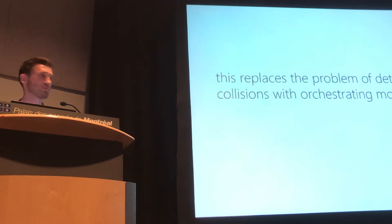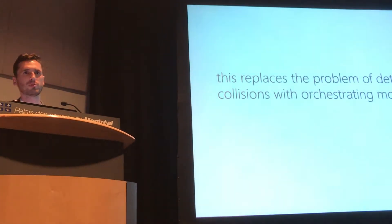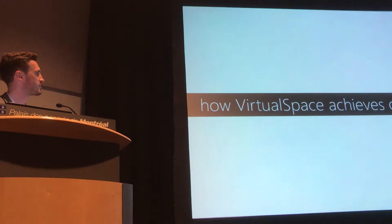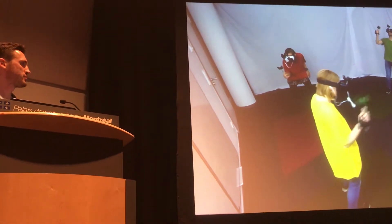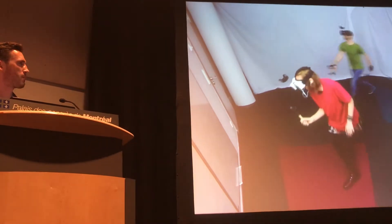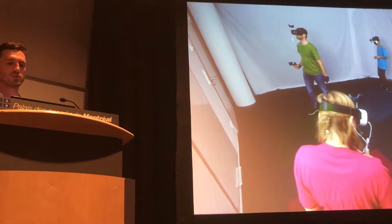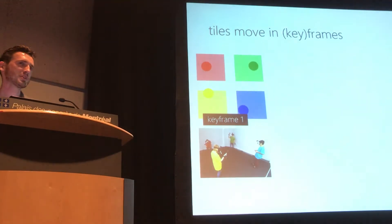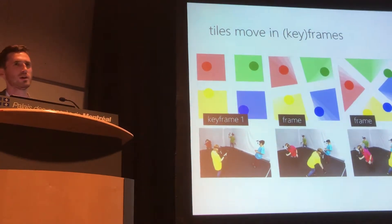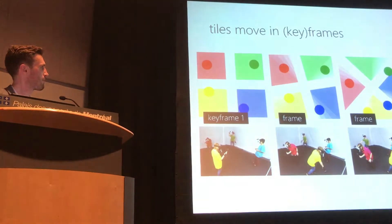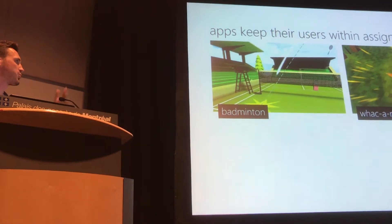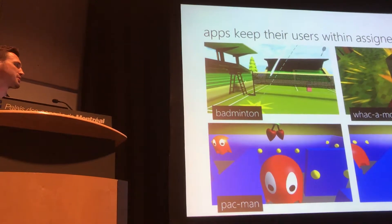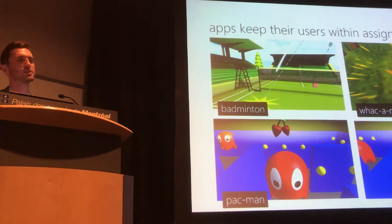This basically replaces our problem — before we had the problem of detecting and preventing collisions, now we need to orchestrate movement. Each user always has a tile assigned to them, and we borrow from the concept of keyframes: from one keyframe we want to get to the next, and we animate in between. This way, the user always has some space to work with. We keep users in their tiles by adding rewards — playing a shuttlecock to a corner in badminton, spawning targets in Whack-a-Mole, or placing a cherry and removing an obstacle so the user moves there.